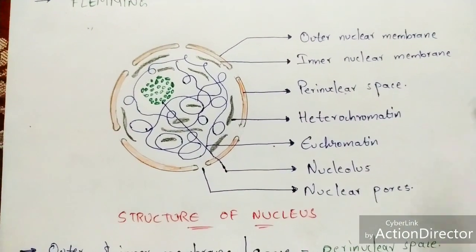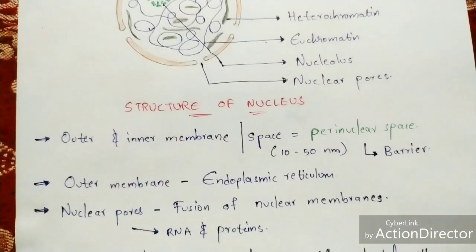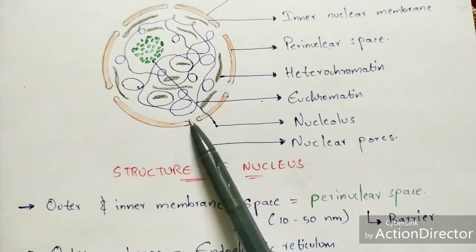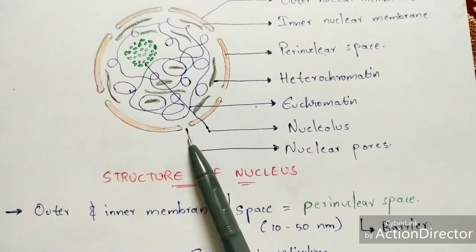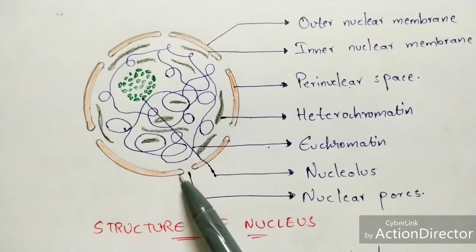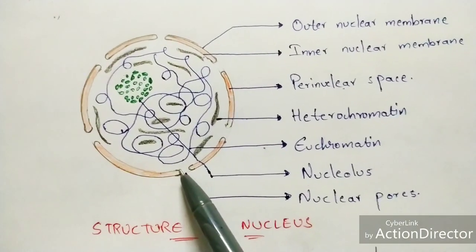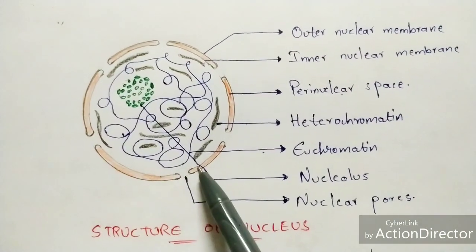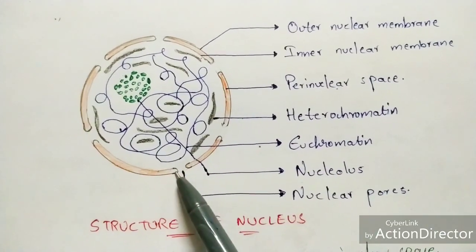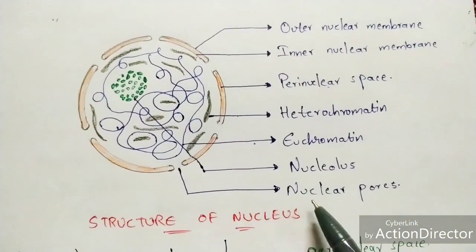The endoplasmic reticulum is present and attached towards the outer membrane of the nucleus. Coming to the nuclear pores: nuclear pores are formed because of the fusion of the outer and inner nuclear membrane. Here, the fusion of the outer and inner nuclear membrane occurs, and due to this fusion, an open edge is formed — and that open edge is called nuclear pores.